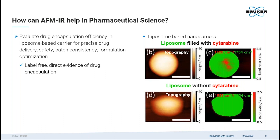While some drug carriers are designed to overcome solubility and stability issues, other times it's needed to encapsulate and deliver otherwise toxic chemotherapeutics to cancer sites with high precision. There is a need to directly observe the encapsulation efficiency of a formulation for the sake of safety, to understand batch-to-batch consistency, and ultimately provide the best therapeutic outcome.